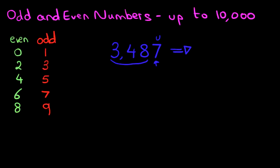Can you spot seven in the two columns on the left? Here it is. Seven is an odd number. Now, if seven is an odd number, then the whole number, 3,487, is also an odd number.